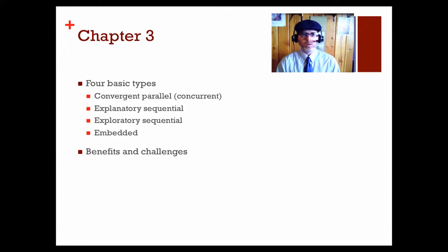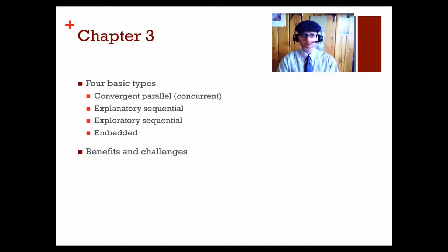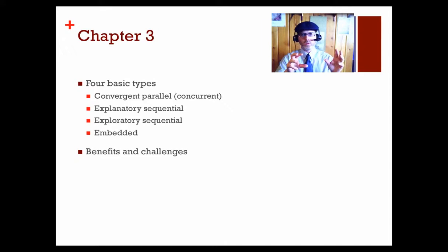In Chapter 3, Cresswell and Plano-Clark discuss four basic types of mixed methods research. First is the convergent parallel, a type of concurrent design where quantitative and qualitative happen at the same time and converge at the results and analysis level — they are collected separately and then converged. Then there are the explanatory sequential and exploratory sequential types: in explanatory sequential, quantitative is collected first and then qualitative is collected afterwards to help explain the quantitative results.